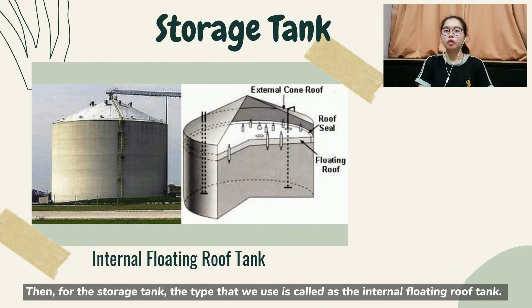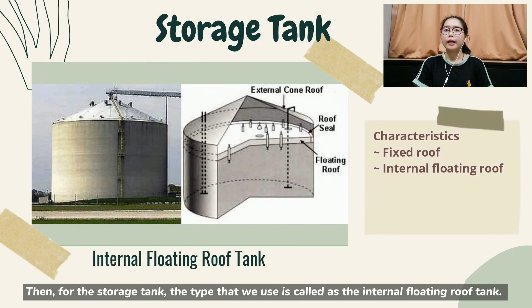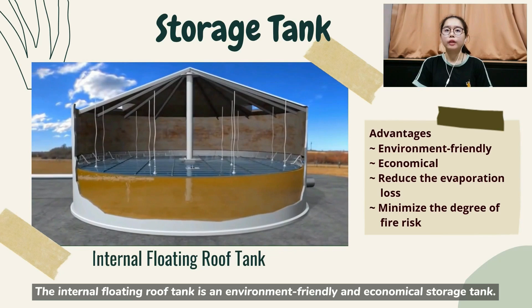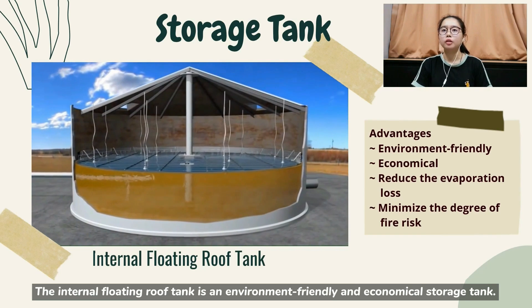Then, for the storage tank, the type that we use is called the internal floating roof tank. It has a fixed roof at the top of the tank and a floating roof inside the tank. The internal floating roof tank is an environment-friendly and economical storage tank.